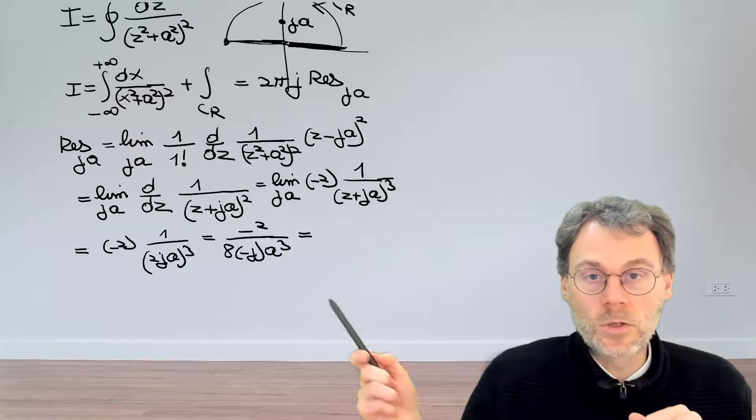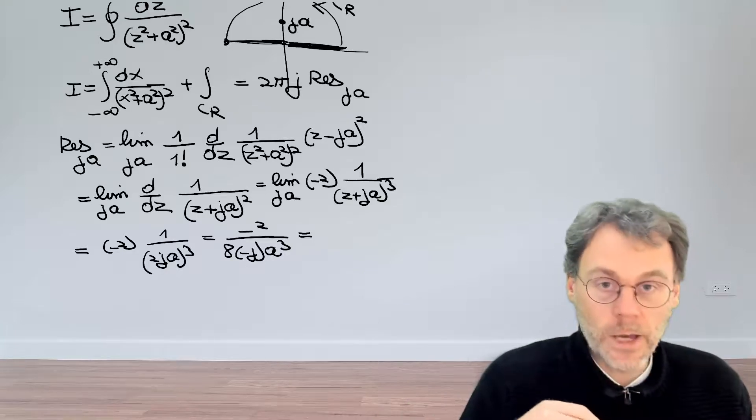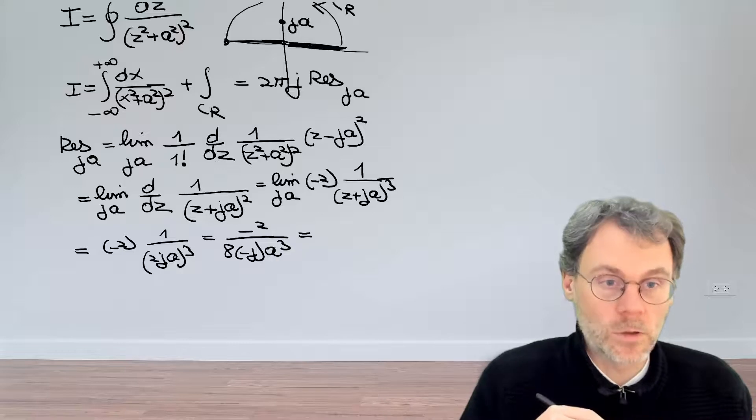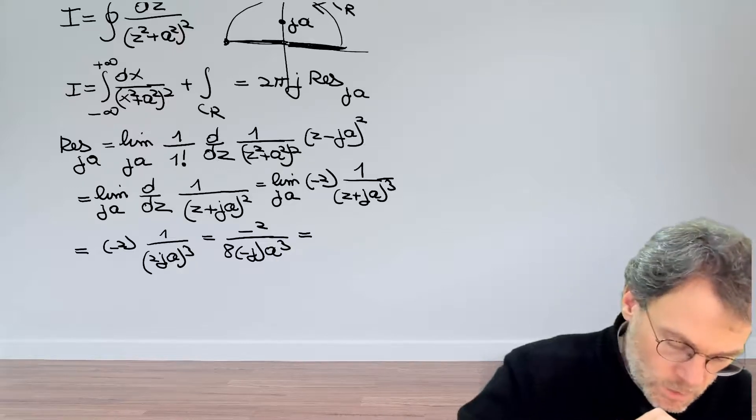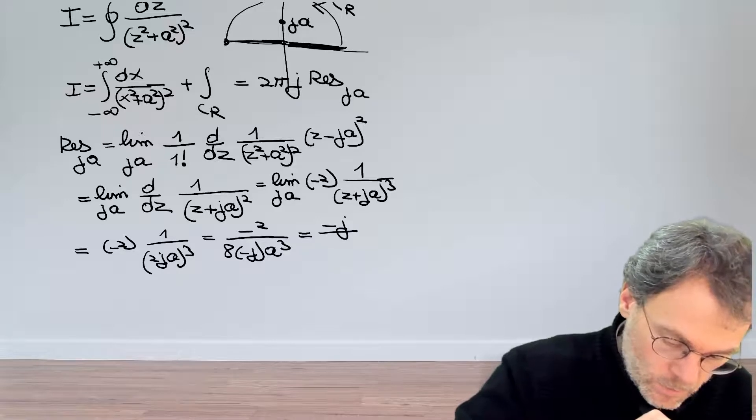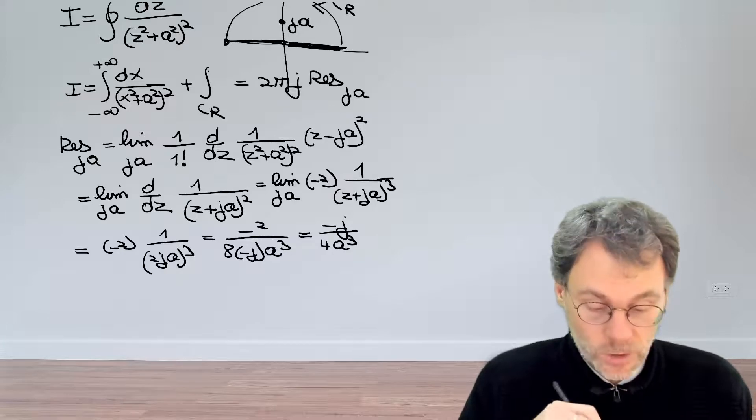Okay, let's also bring this j to the numerator. Then we pick up an extra minus sign, so this gives us three minus signs in total. So that's a minus one, so minus j, and then this becomes four a cubed. So this is the residue.